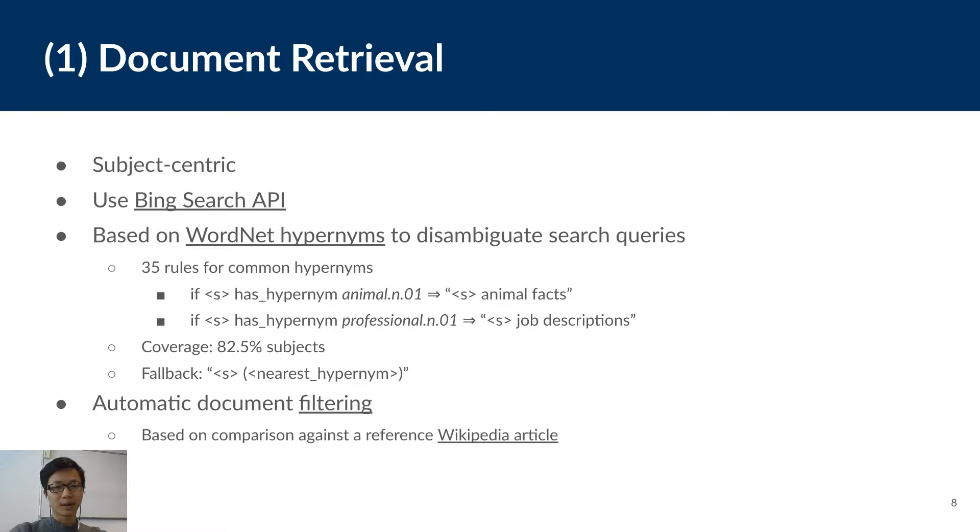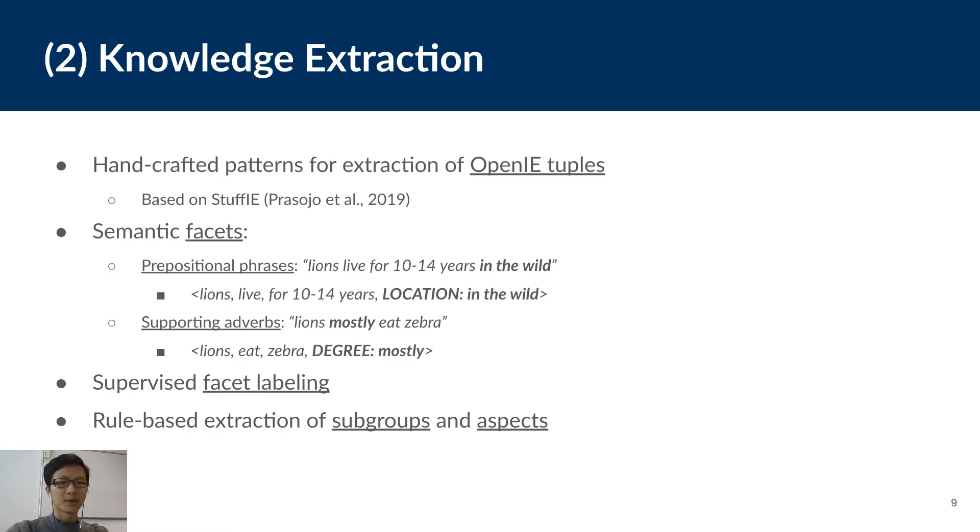Then, we use a simple method to filter out irrelevant documents by comparing each document with a reference Wikipedia article. And documents ranked lower will be omitted in the later phases.